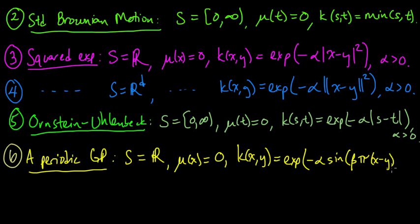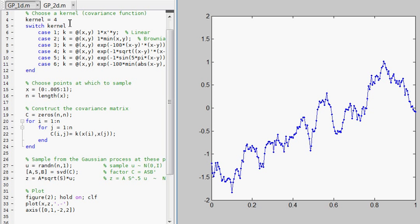Now our covariance function is going to be e to the minus alpha sine beta pi times x minus y, that quantity squared, the sine of that squared. Alpha and beta are some positive numbers. What the sine is going to do is introduce periodicity into this covariance function.